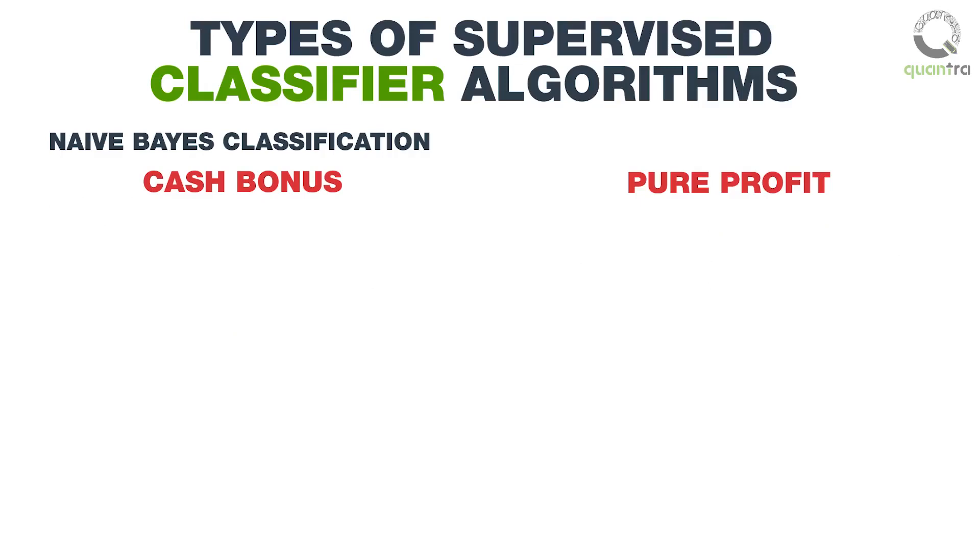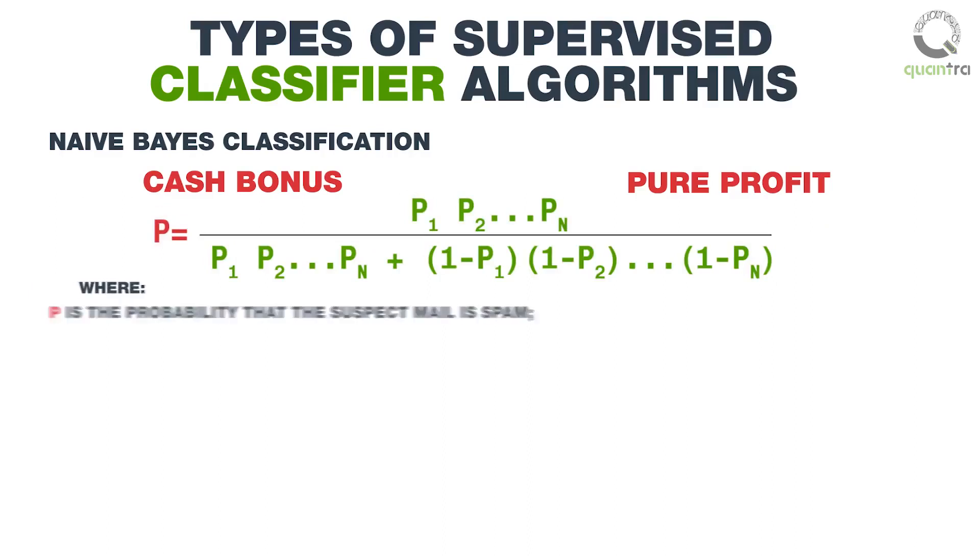Then these probabilities are combined, using the formula on the screen. Where, P is the probability that the suspect mail is spam.